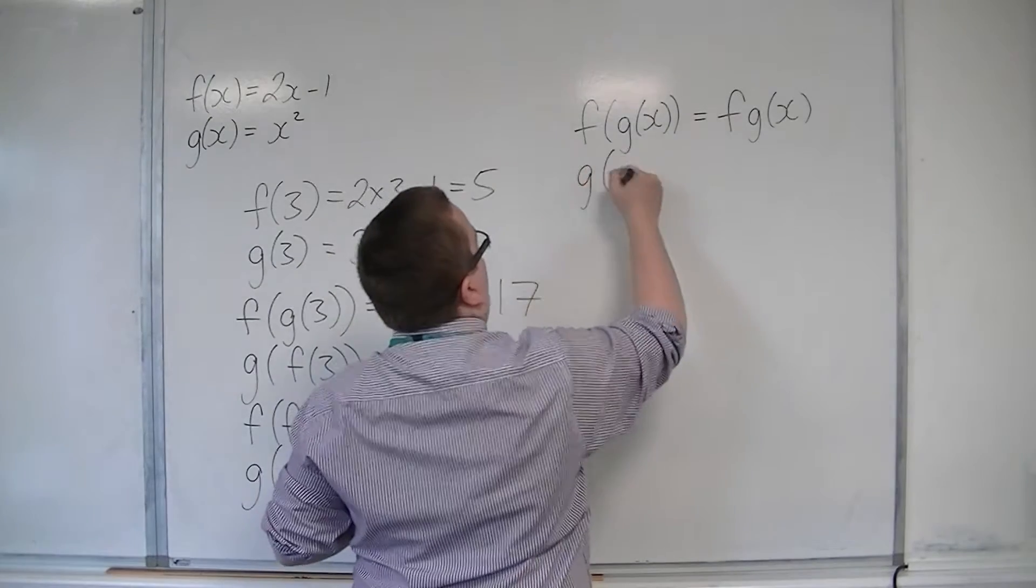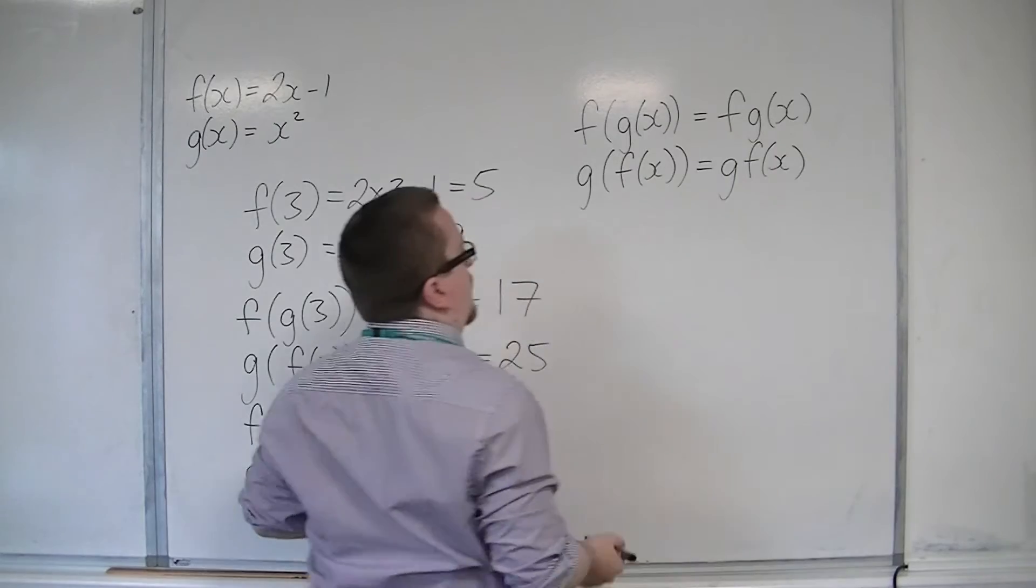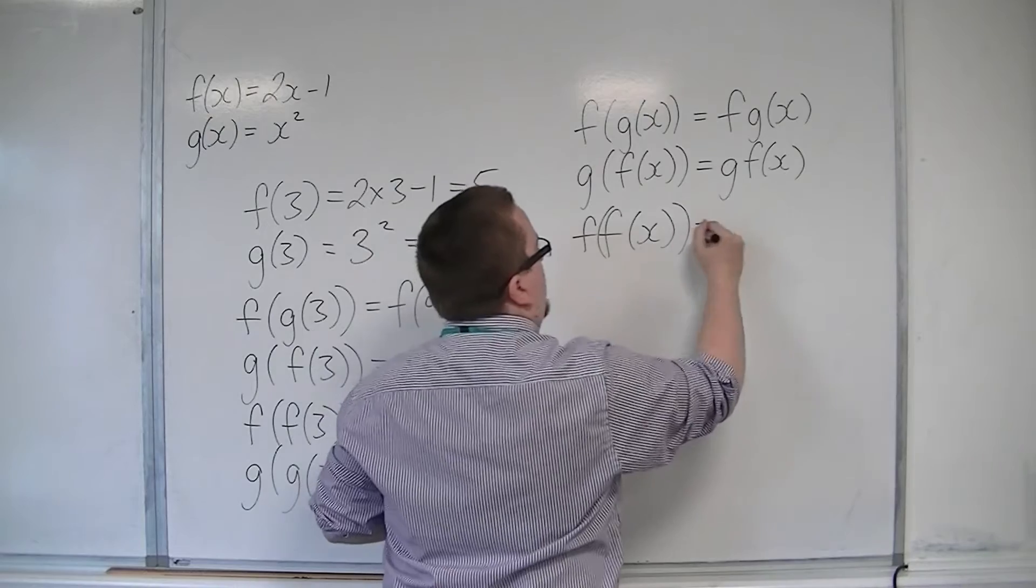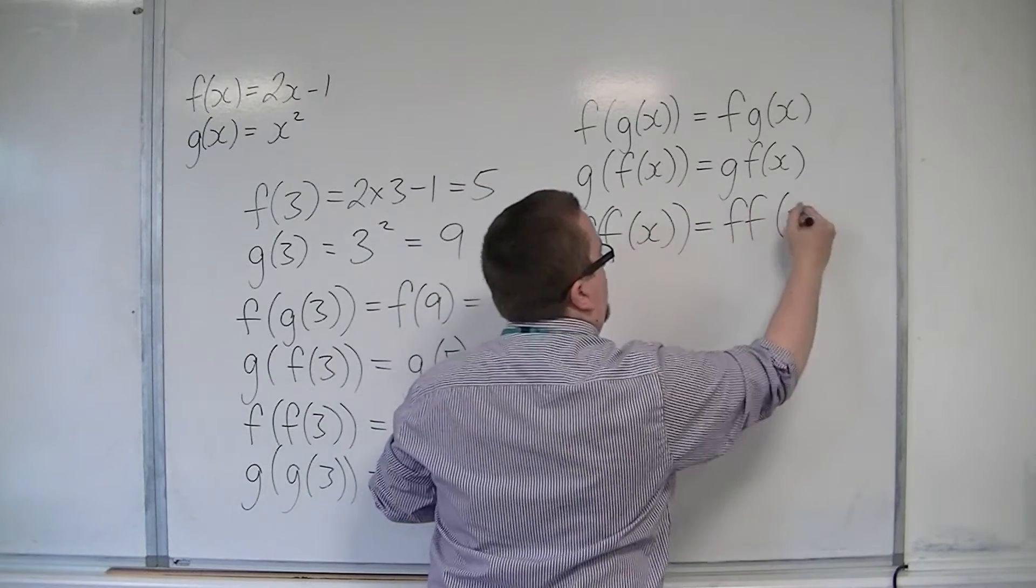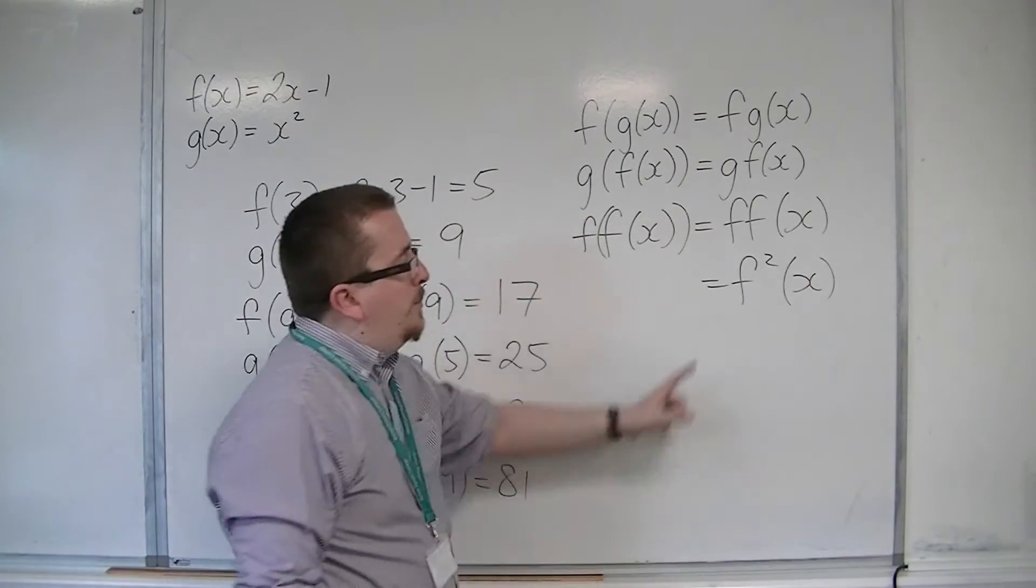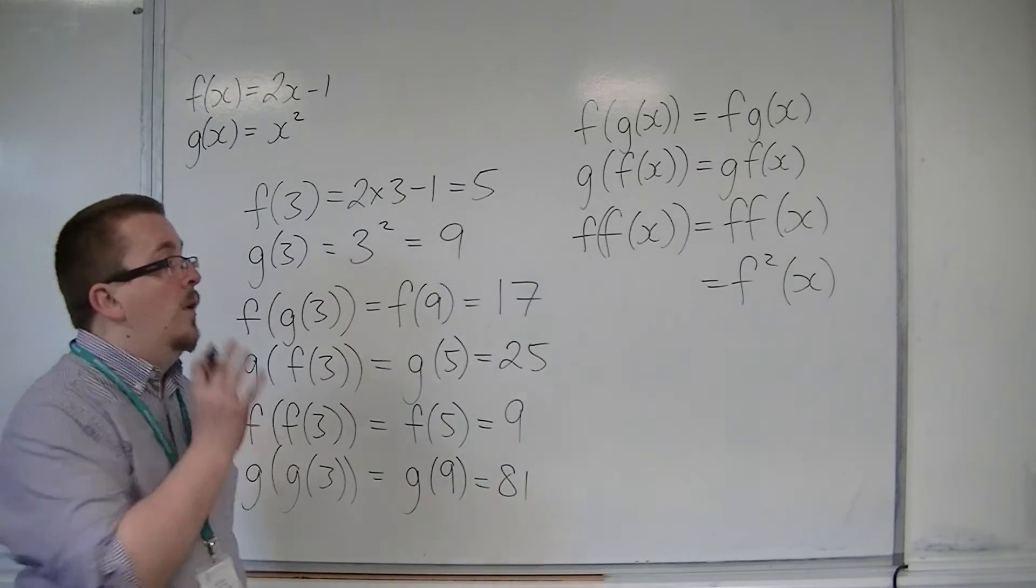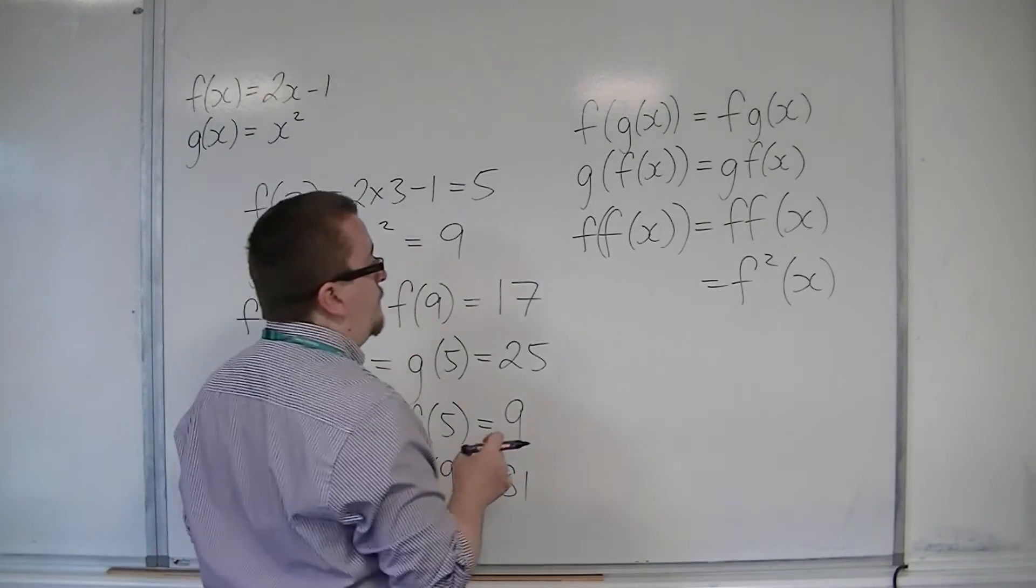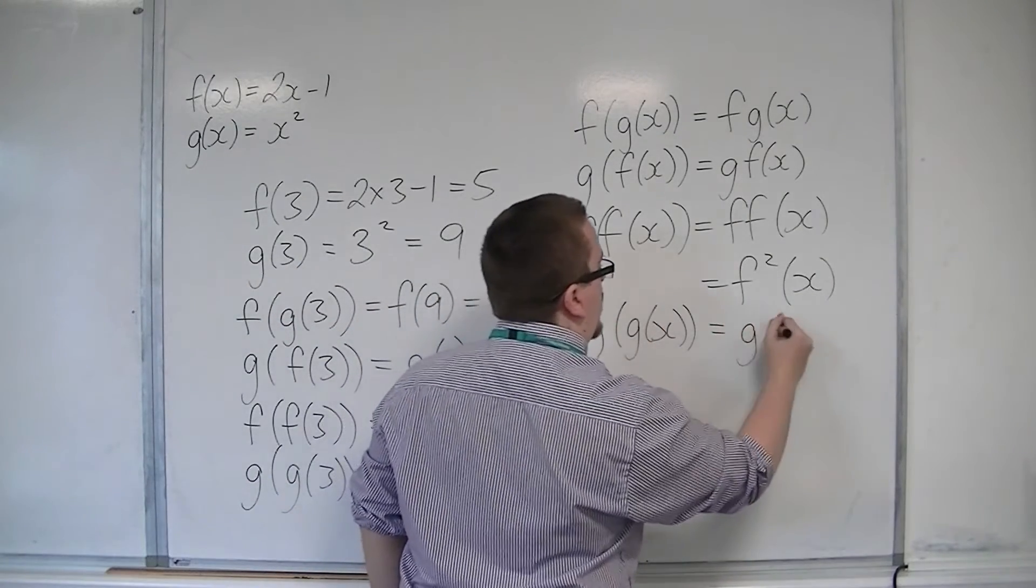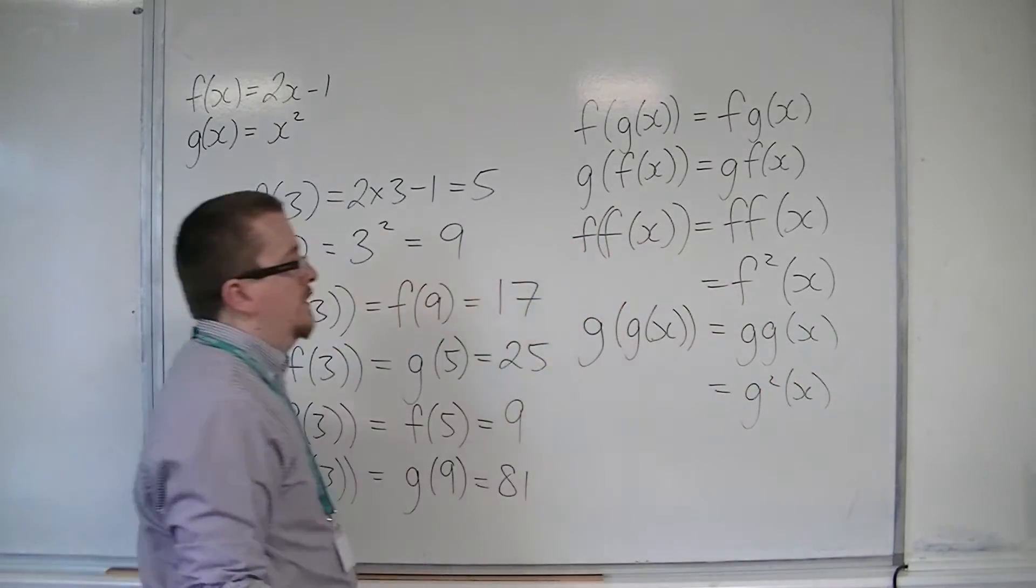So g of f of x is gf of x. If I want f of f of x, then I can either write that as ff of x, or you could write it as f2 of x. But I don't particularly like that notation, because it often confuses students with squaring. And this has got nothing to do with squaring. So g of g of x could be written as gg of x, or g2 of x.